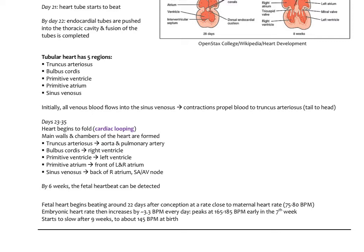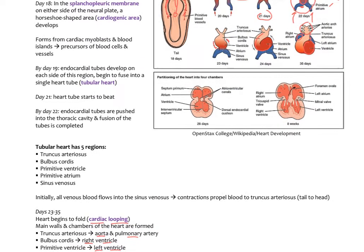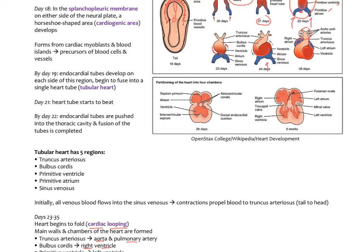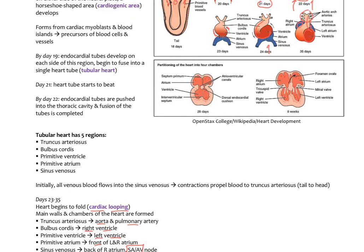Cardiac looping forms the different chambers. The truncus arteriosus becomes the aorta and pulmonary artery; the bulbus cordis becomes the right ventricle; the primitive ventricle becomes most of the left ventricle; the primary atrium forms the front of the left and right atria; and the sinus venosus forms the back part of the right atrium — importantly where the SA and AV node pacemakers are located. After looping, the heart's blood flow will go from the atria outward, but the fetus needs to bypass the lungs since it isn't breathing.